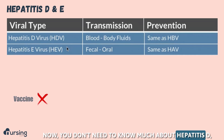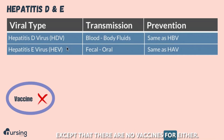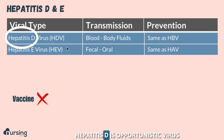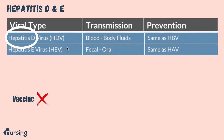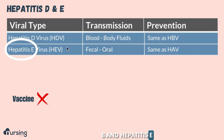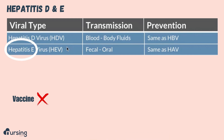You don't need to know much about hepatitis D and E, except that there are no vaccines for either. Hepatitis D is an opportunistic virus that only occurs with hepatitis B, and hepatitis E is really common in underdeveloped countries.